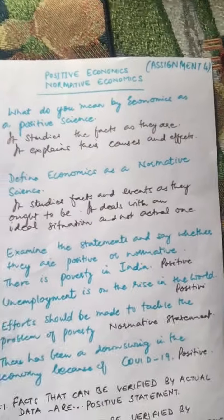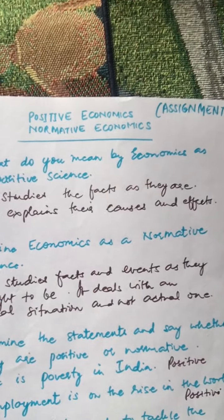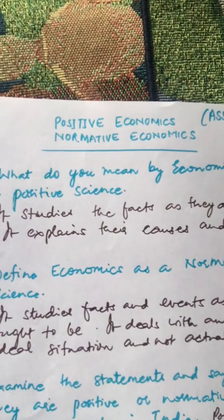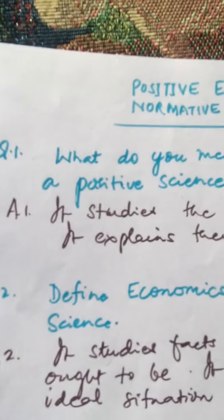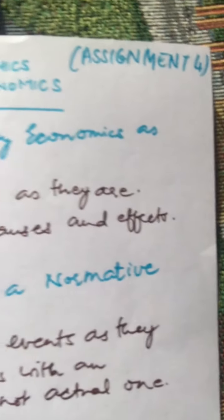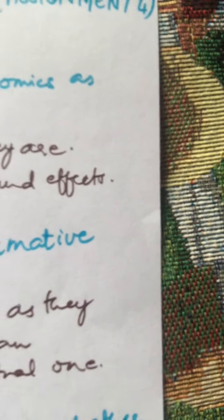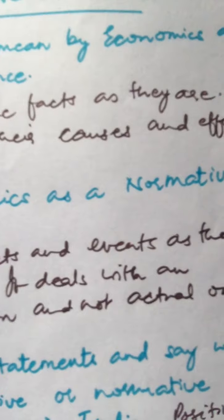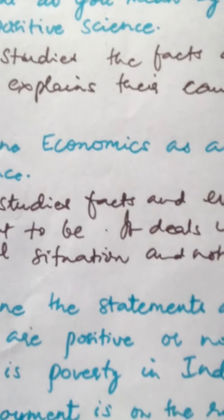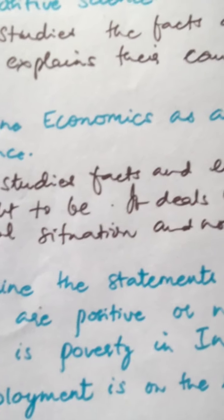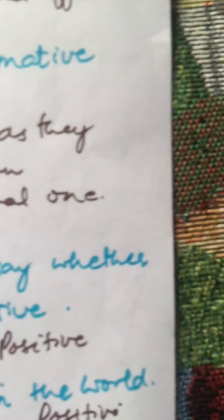Now let's move on to the answers for Assignment Number Four, which was on positive economics and normative economics. Question 1 — What do you mean by economics as a positive science? Answer: It studies the facts as they are; it explains their causes and effects. Question 2 — Define economics as a normative science. Answer: It studies facts and events as they ought to be; it deals with an ideal situation and not an actual one.